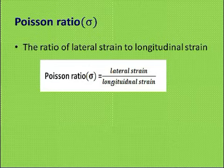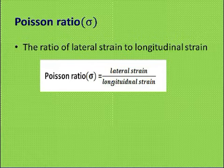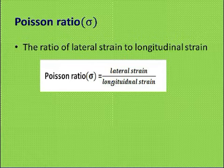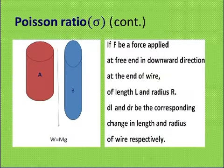Poisson's ratio is denoted by sigma, and it is the ratio of lateral strain to longitudinal strain. Lateral means in the perpendicular direction. When force is applied along the length, the change parallel to force is longitudinal; the change perpendicular is lateral. If you stretch a wire, its length increases — that is longitudinal strain — while its diameter decreases — that is lateral strain.